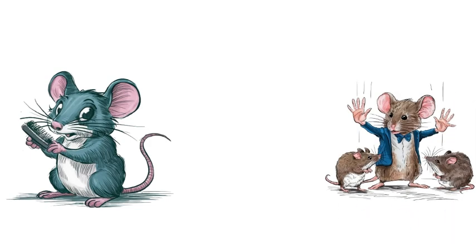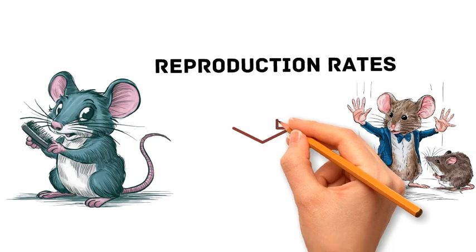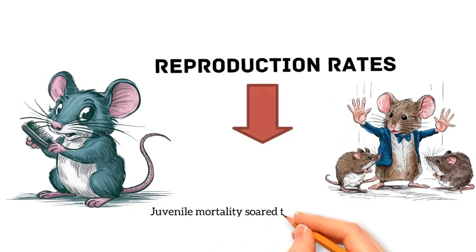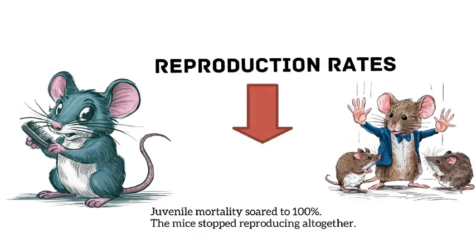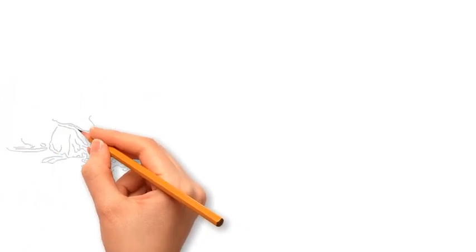As these behaviors spread, reproduction rates plummeted. Juvenile mortality soared to 100%. The mice stopped reproducing altogether. Despite the abundance of resources, the population's social fabric unraveled.